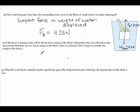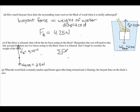If the block is now released, what will be the net force acting on the block? Once the block is released, the hand is no longer acting. We have the weight of the block acting downward at 2.5 newtons, and the upward buoyant force of 4.25 newtons. The net force is 4.25 newtons upward minus 2.5 newtons downward, giving a net force of 1.75 newtons upward.